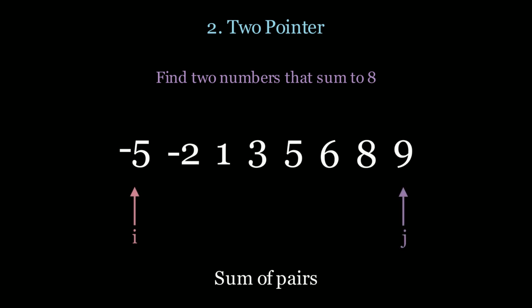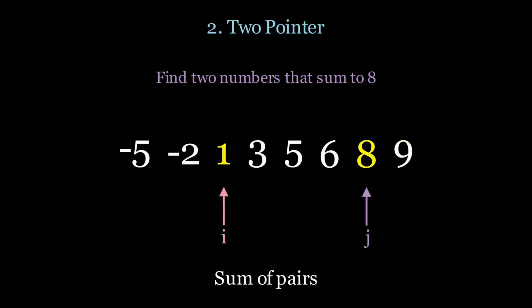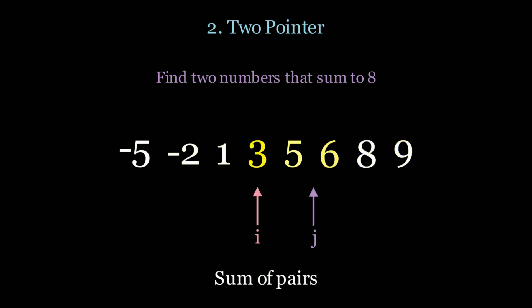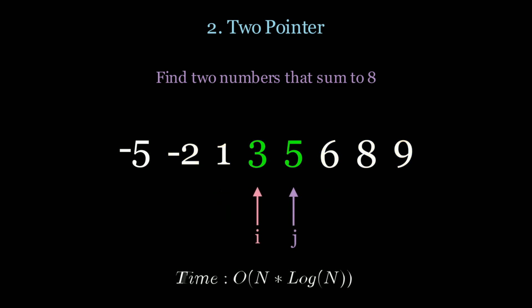If we have the same array, we sort it first. Now we start two pointers at the ends of the list and sum those numbers. If the sum is less than the target we move i; if the sum is greater than the target we move j. Finally we find our result in O(n log n) time.